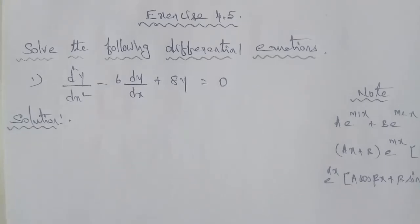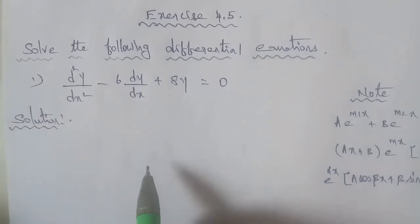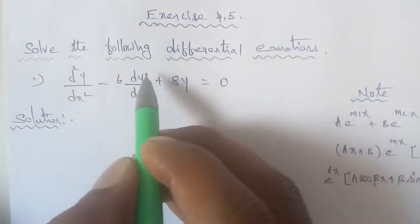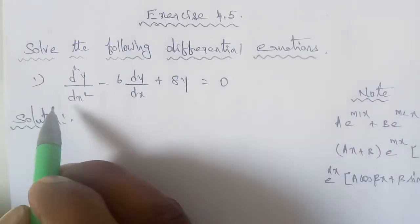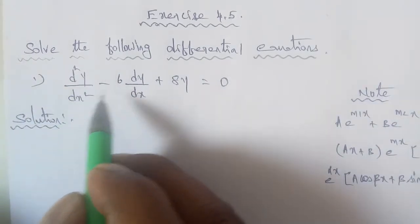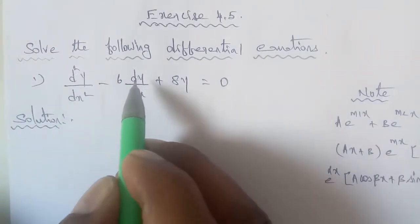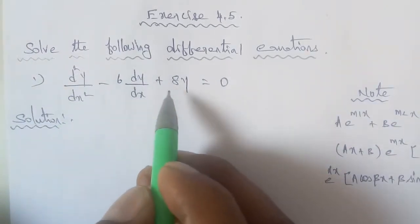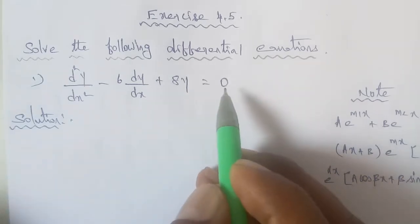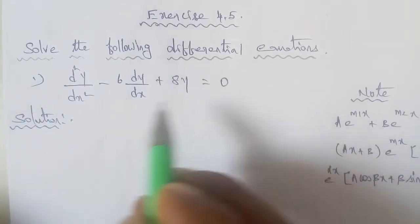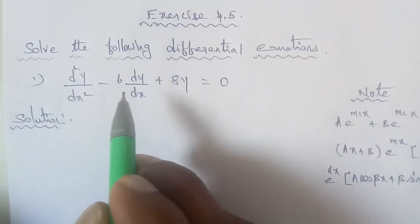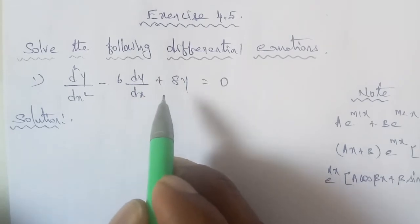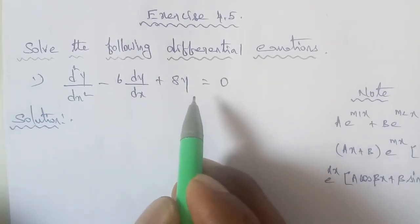Hi students. Exercise 4.5, solve the following differential equations, question number one: d²y/dx² minus 6 dy/dx plus 8y is equal to 0. This is a second-order linear differential equation.